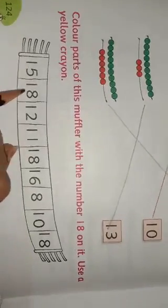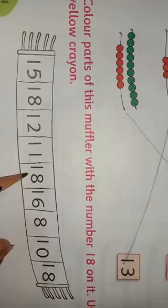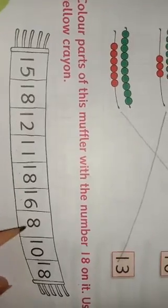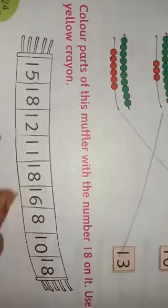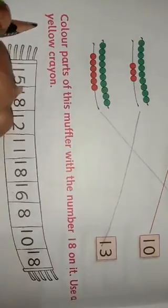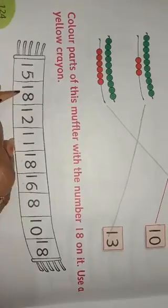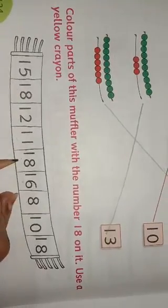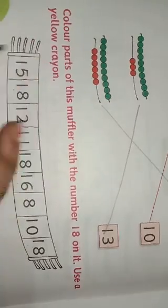Which number is given? This is 15 number, this is 18, this is 12, this is 11, this is 18, 16, 8, 10, and 18. So what we do? We color the yellow crayon on the 18 number. This is 18 number, this is 18 number, and this is 18 number. We fill the yellow color with crayon.